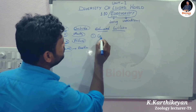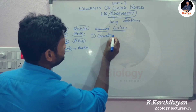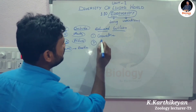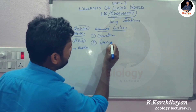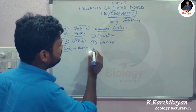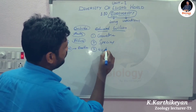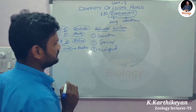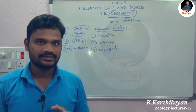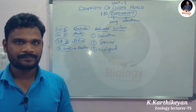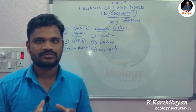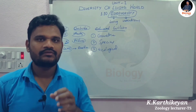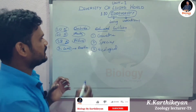The three levels of biodiversity are: first, genetic biodiversity; second, species biodiversity; and third, ecological biodiversity. Let's now look at each of these in detail.